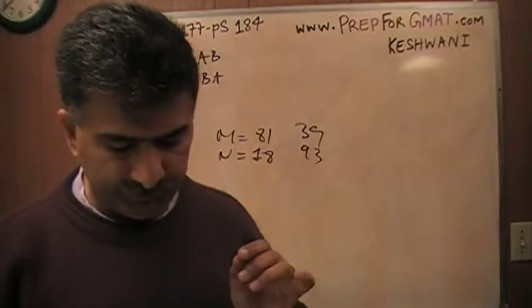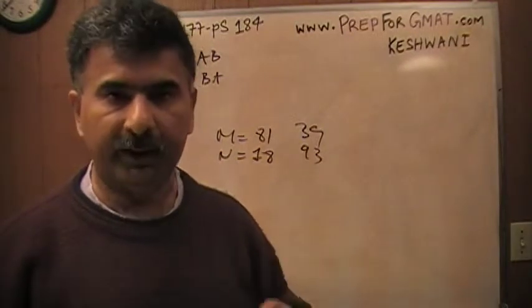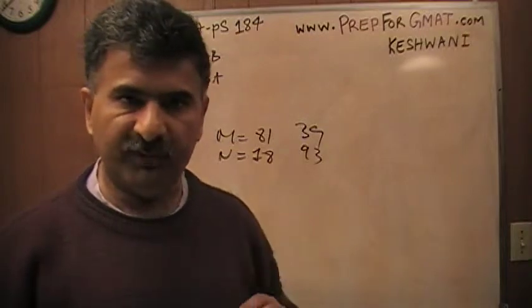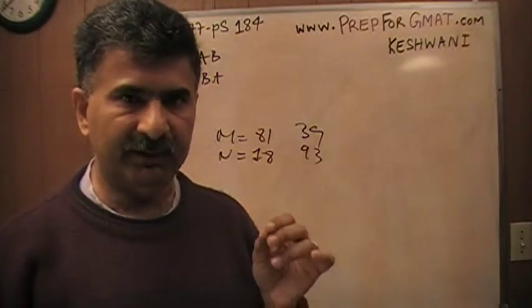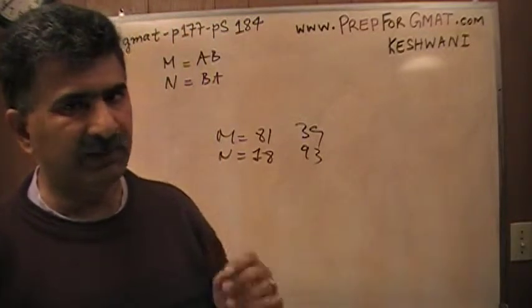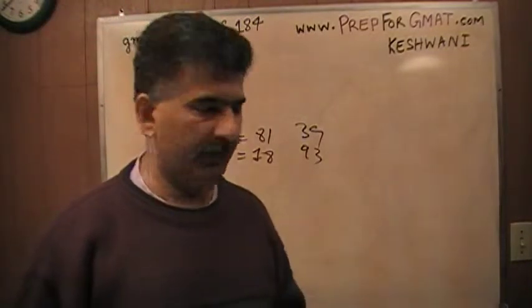The question simply is, which of the following cannot be the sum of M and N. When you add up the integer M and N, out of these five other choices, one cannot possibly be the sum of these two integers. Our job is to locate the one that cannot be the sum. In other words, there are four that can be the sum.